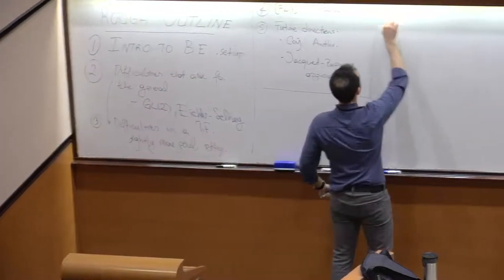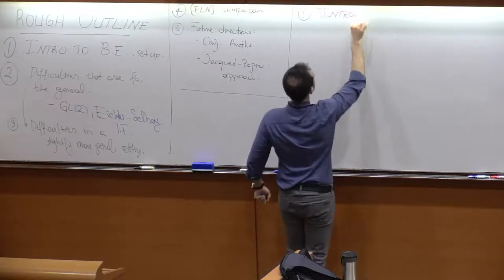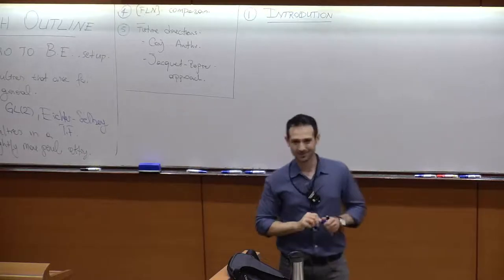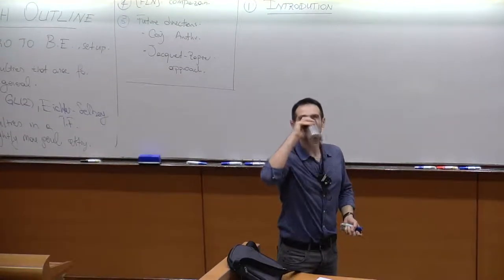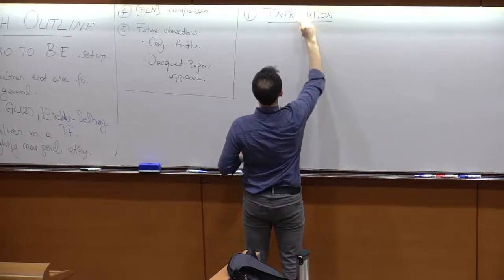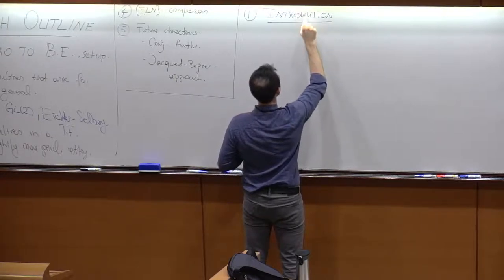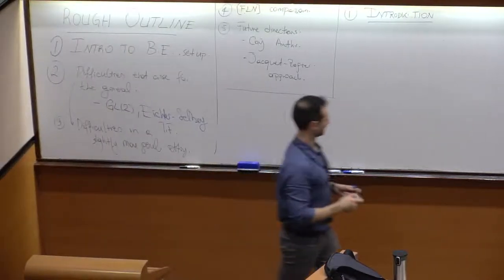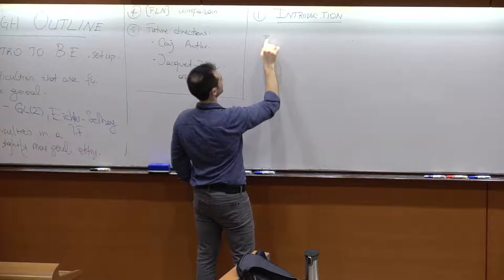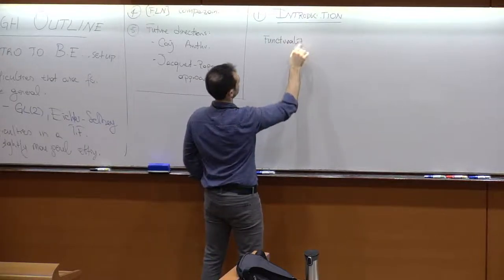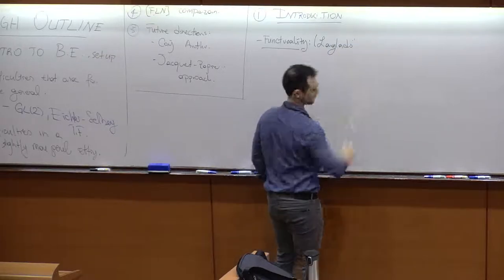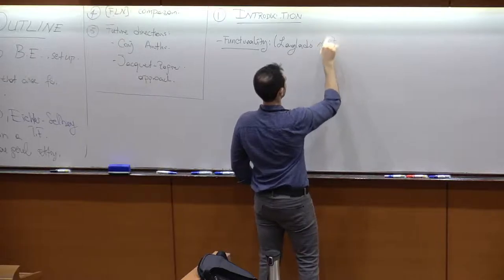Introduction. Everything starts with Langlands' functoriality conjectures. I'm sure everybody has written this a million times. This was introduced in the famous letter of Langlands, I believe in 1967. It roughly says the following: take two groups H and G — I'm going to take them to be quasi-split over ℚ to avoid complications, though it is of course much more general.